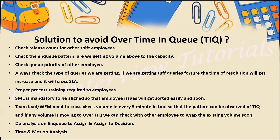Now, solutions to avoid Over TIQ. Team leaders must: continuously monitor volume; continuously check queue priority; continuously check the trend of what kind of volumes are arriving; capture the enqueue pattern — when exactly volumes are getting queued. For example, in a 24×7 operation, if I observe volumes are mostly enqueued at night, I will roster more employees in the night shift. This is a basic enqueue pattern analysis — it tells you where to allocate more headcount to avoid Over TIQ.